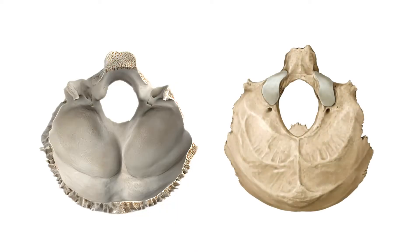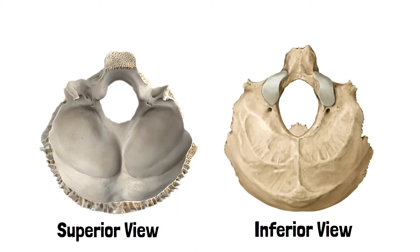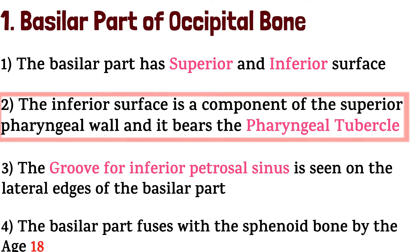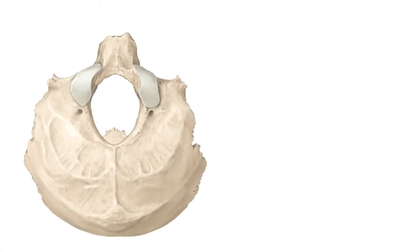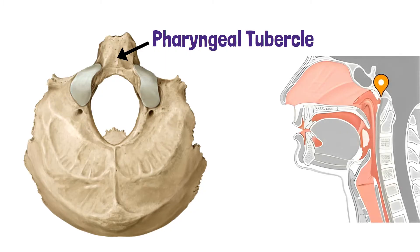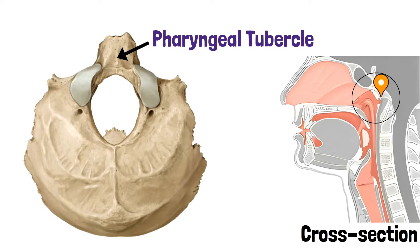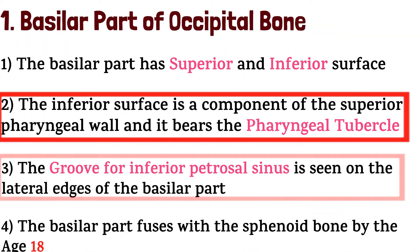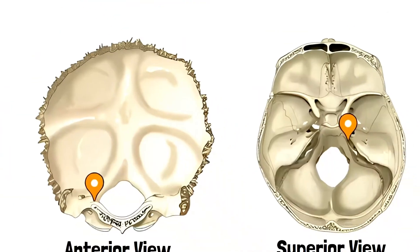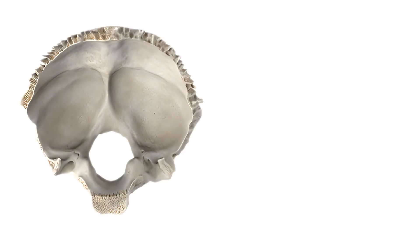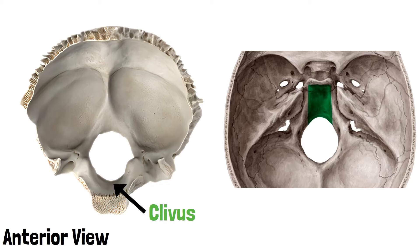Looking at the superior and inferior views of the bone: this is the superior surface of the basilar part, and here is the inferior surface of the basilar part. The inferior surface is a component of the superior pharyngeal wall and bears the pharyngeal tubercle, seen here in the cross-sectional view. In the anterior and superior view, these markings depict the groove for the inferior petrosal sinus on the lateral edges of the basilar part. This is the clivus, formed by the superior surfaces of the basilar part and the body of the sphenoid bone.